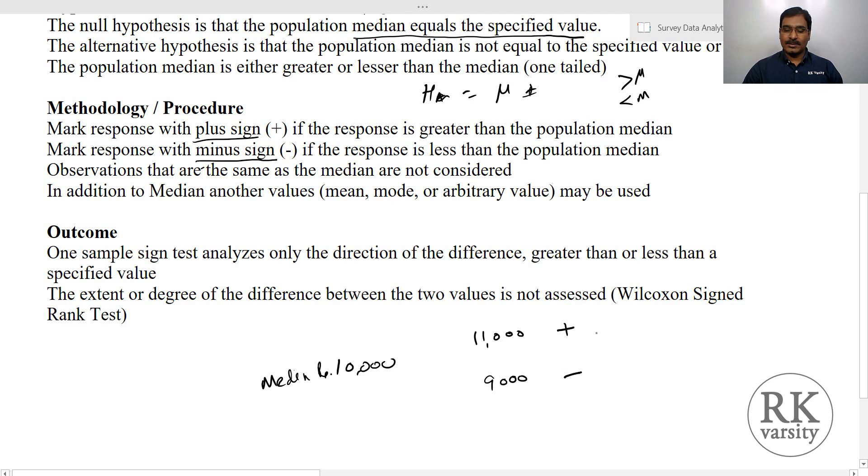Performance is made, the test is statistically calculated using the number of plus, that is sum of plus and then sum of minus values. Using these values, we will calculate the one sample sign test. Certain times you may not have a median value. If median value is not available, then you can use any other value like a mean value, mode value, or any arbitrary value that you think appropriate for a particular kind of test.